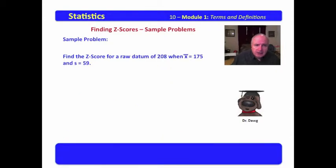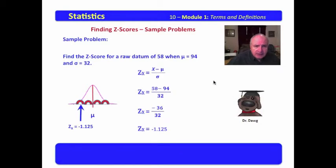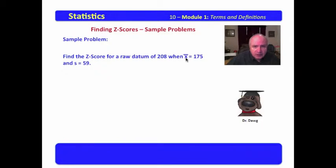Now let's look at another one. Find the Z-score for a raw datum of 208 when X-bar equals 175 and S equals 59. It's interesting to us that when we do this, we know that this is a sample because we have X-bar and we have S. We would use this formula. We would plug in, we would simplify, and we find that our Z-score is equal to 0.56.